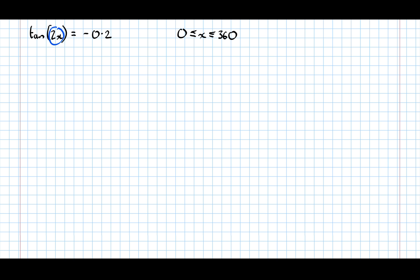What we're going to notice here is the limits we're given — 0 to 360 — were just for x, but actually we've been given 2x, so we need to change the limits for 2x. We've doubled x, so we need to double the limits to 720, and 0 doubled remains 0.